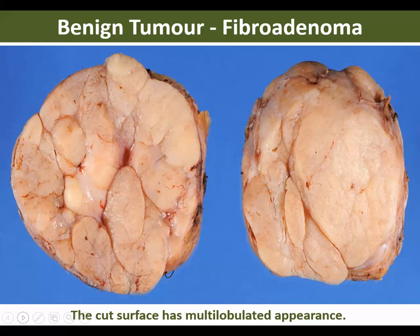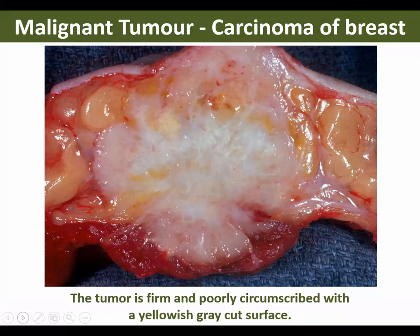This is a benign tumor — 'oma' means benign. It contains fibro plus adenoma; it is a mixed tumor of the breast called fibroadenoma. If I keep this slide and ask for the diagnosis, you should write fibroadenoma. Next, this is the carcinoma of the breast — you can see it is completely spreading. If I keep this and ask for the diagnosis, the answer is carcinoma of the breast.